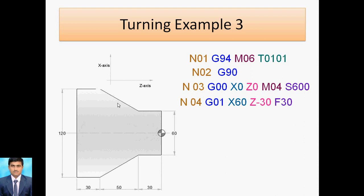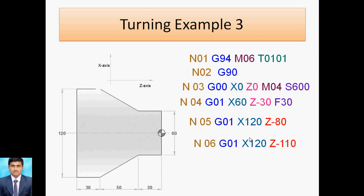Now to the next point: diameter 120 is there, so X120. Z is minus 80 — but negative side — so Z minus 80, with G01 for linear interpolation. The tool moves in a straight line. The next block: X120 Z minus 110, since 50 plus 30 plus 30 equals 110. The tool approaches this point on the step profile.